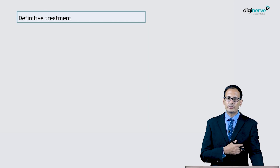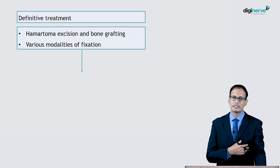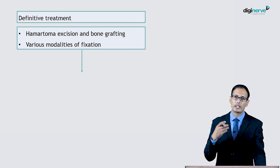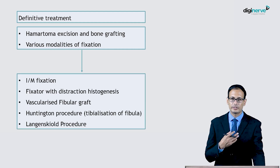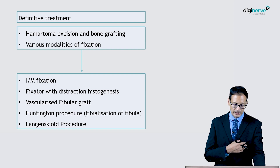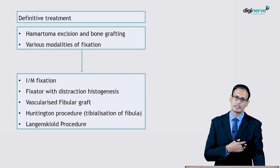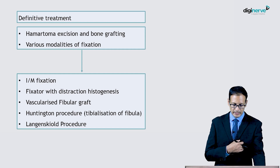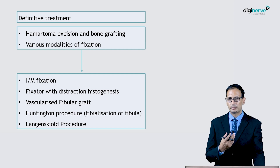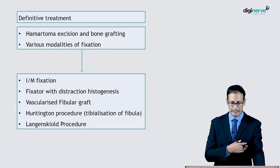Definitive treatment includes hematoma excision and bone grafting along with various modalities of fixation, which may include intramedullary fixation with various nailing methods, external fixator with distraction osteogenesis, vascularized fibular graft, Huntington procedure — that is tibialization of fibula — and Langenskiöld procedures.